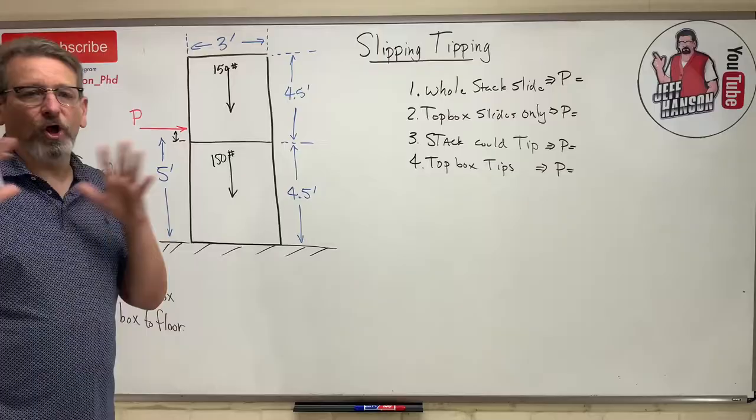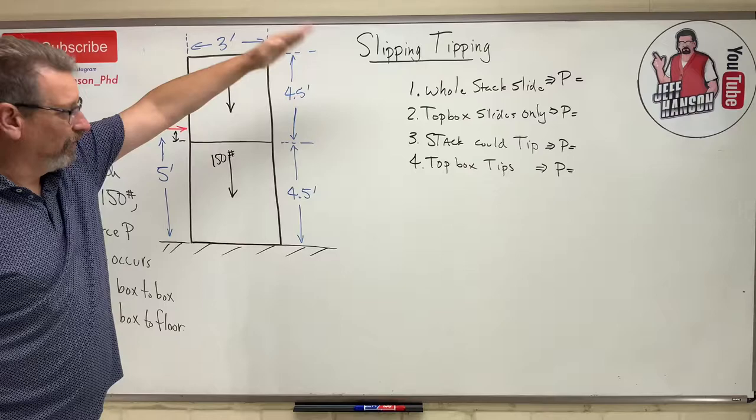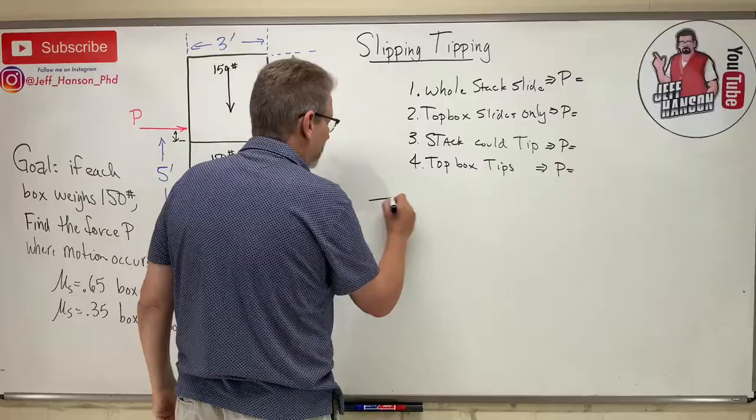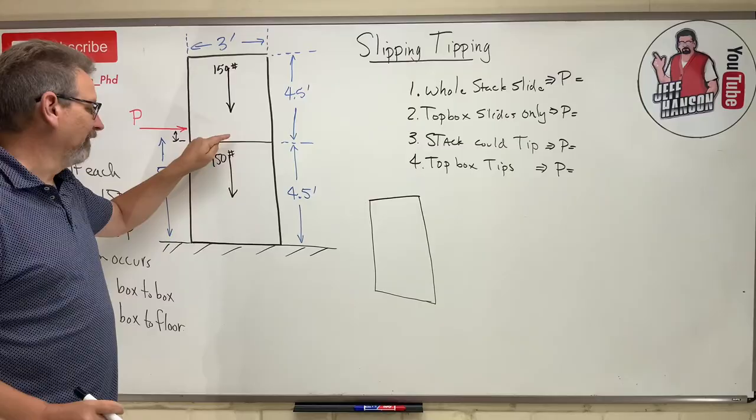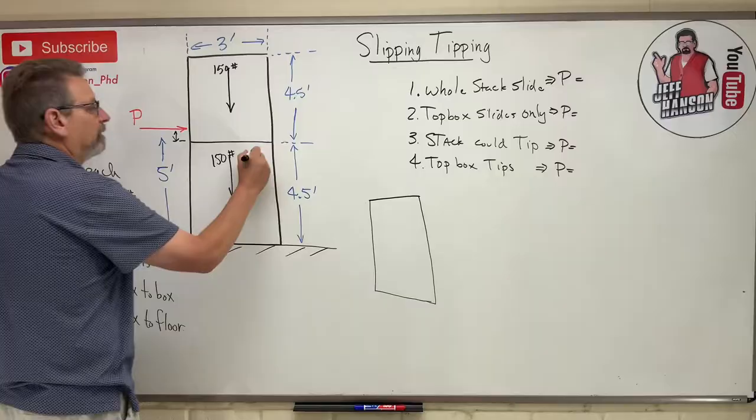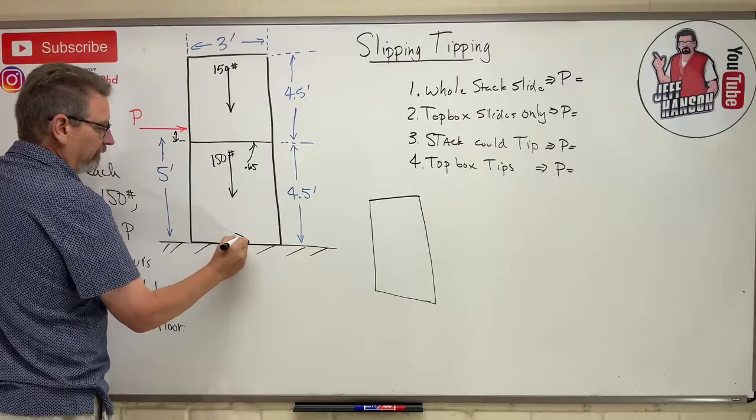Solving statics friction problems is all about the free body diagram. Let's try the whole stack slides first. Look at this as one big box. For the whole stack to slide, we're assuming no sliding between the boxes — that interface is grippy at 0.65. The floor interface is slippy at 0.35.